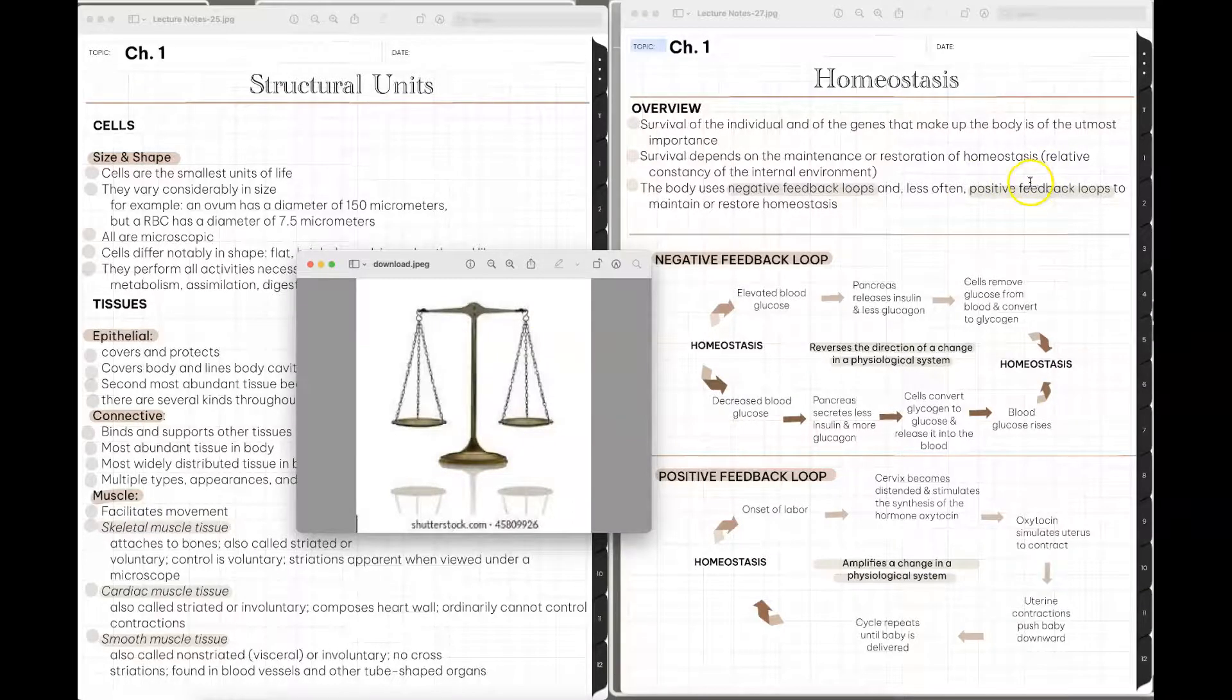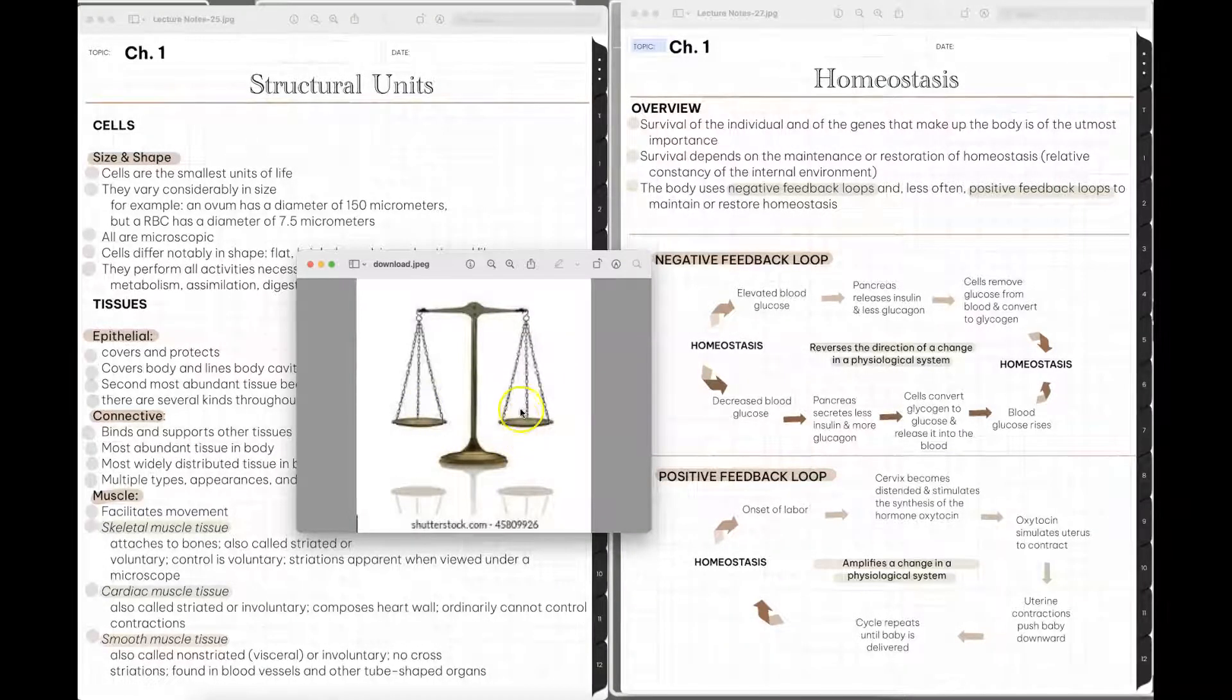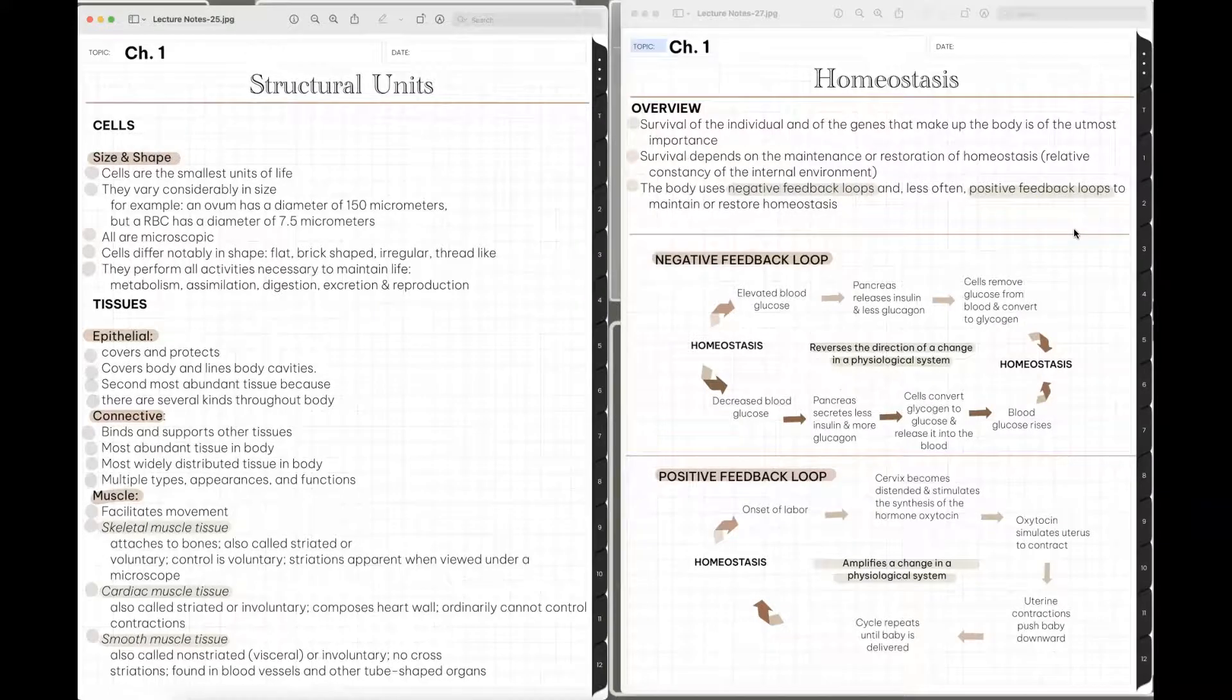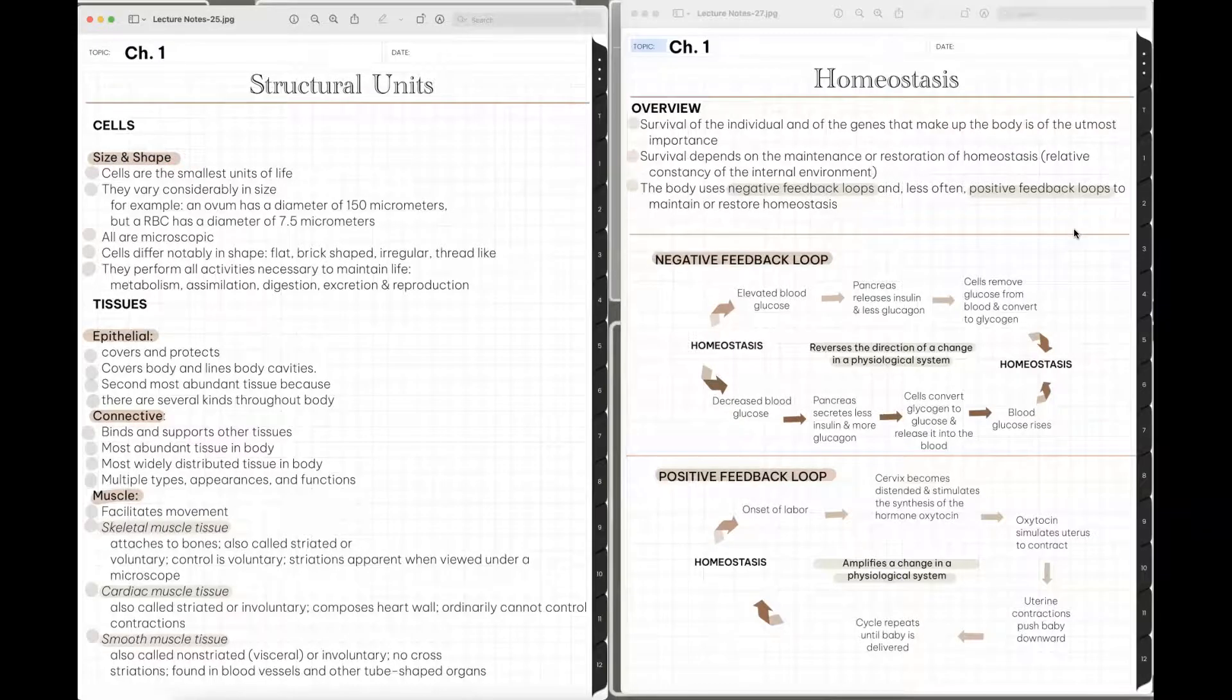It is the relative constancy of the internal environment. And so if you look at this picture of this old scale, the goal of homeostasis would be to keep these even. Now, obviously, if we put more substances or weight on one side, the scale would tip and one side would be higher than the other side. But if we took some of that weight off, then they would be even. And that's kind of how homeostasis works. You want it to be constantly even, as even as possible. This is because our survival, survival of us as individuals and of the genes that make up our body is super important. The goal is to kind of try to stay as healthy as possible and alive. And our survival depends on the maintenance or the restoration of that balance or homeostasis.